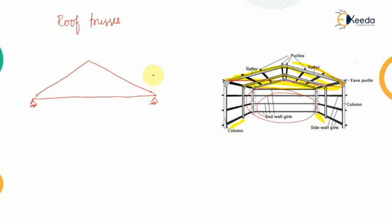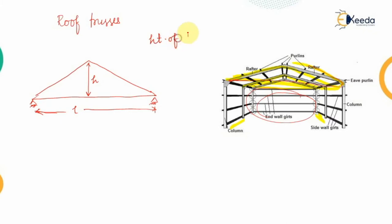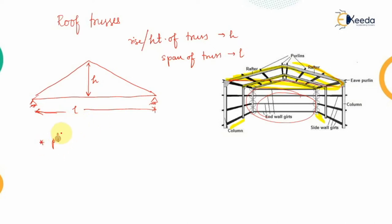For this truss there are certain dimensions we need to define. The height is represented by h, and the span of the truss is represented by l. This height h is sometimes also known as the rise of the truss, while the span or length of the truss is given by small s.